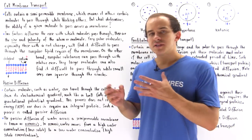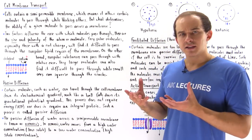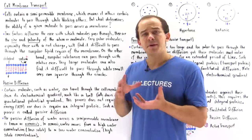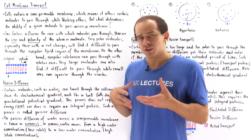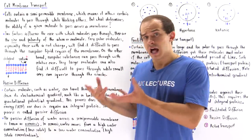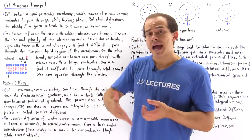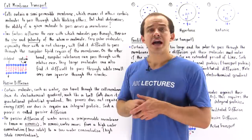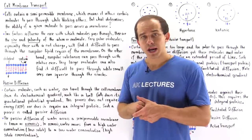The size aspect is a bit intuitive — the larger the molecule, the less likely it will pass through that cell membrane.